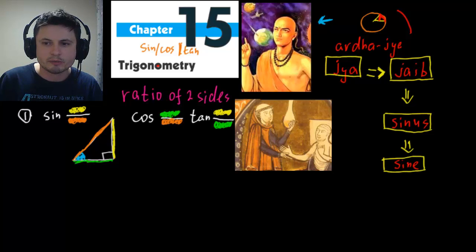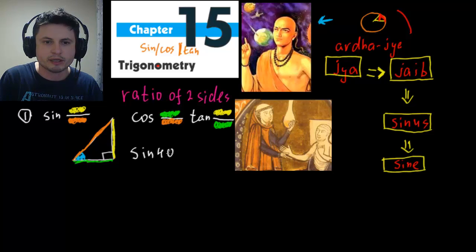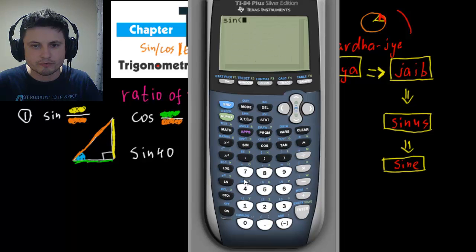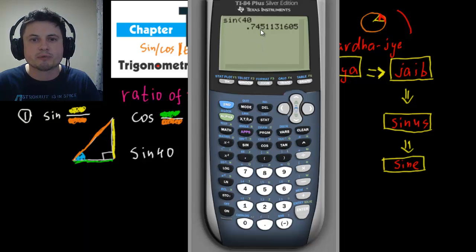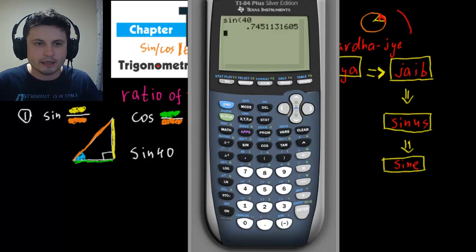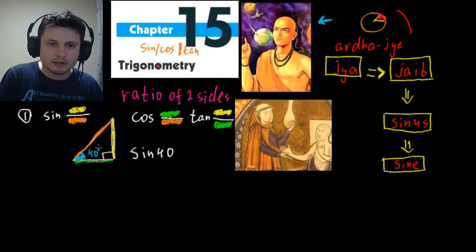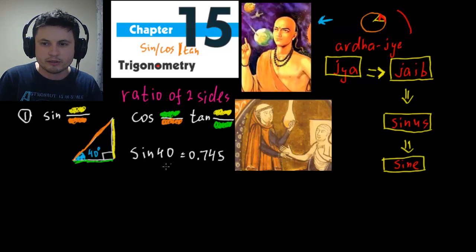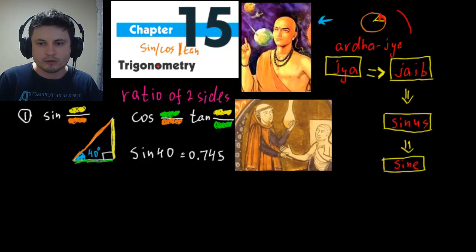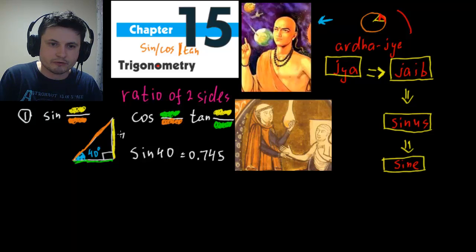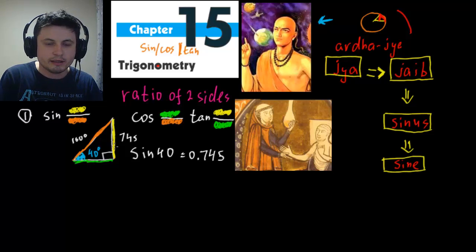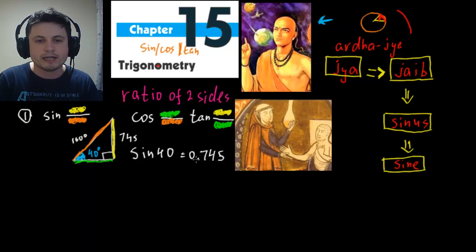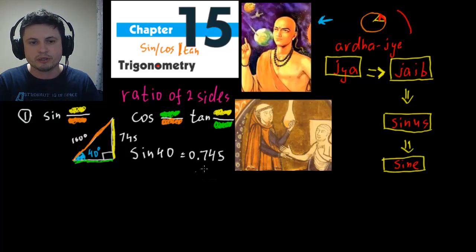So why do we need all this? What does, for example, sine of 40 mean? Let's go to the calculator right now — sine of 40 gives us 0.745. This is a ratio. So if we have an angle of 40 degrees, sine of 40 gives us a ratio of 0.745, meaning the yellow side divided by the orange side equals 0.745. For example, if the yellow side were 745 units long and the orange side were 1000 units long, their ratio would be 0.745.